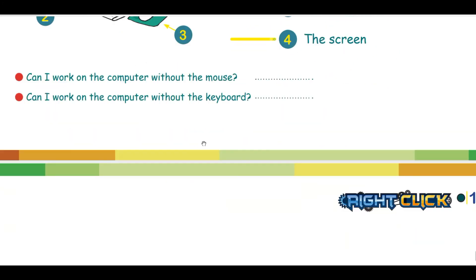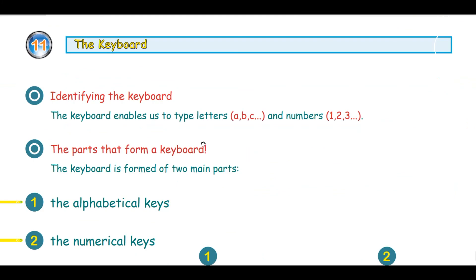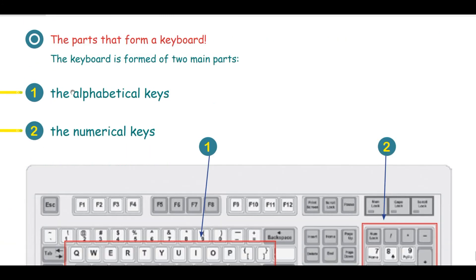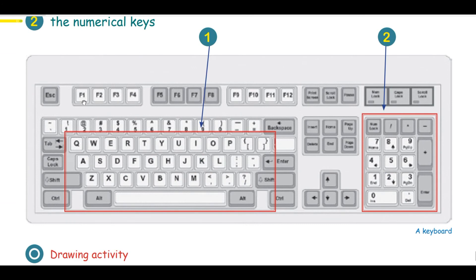Then you will pass to the second page and start identifying the different parts of the keyboard by showing them the first part, which is the letters, and the second part, the numbers. No need to go through details like special characters, backspace, delete, alt, shift, or control. Just limit yourself to the two main sections: the alphabetical keys and the numerical keys.